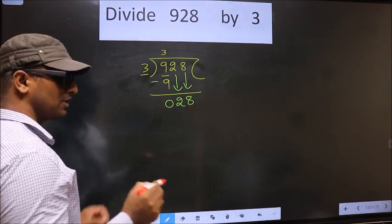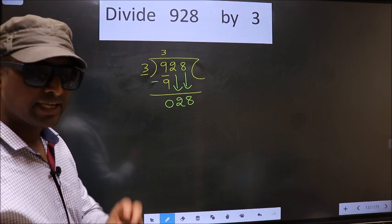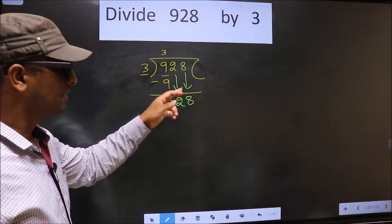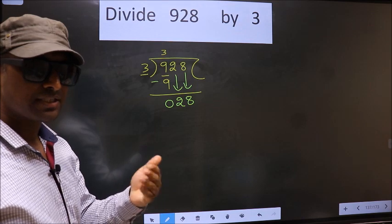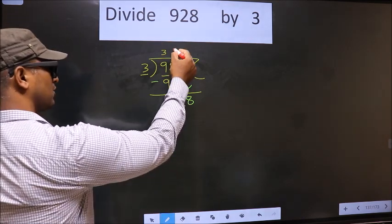I repeat. Over here you should remember this point. Whenever you are bringing down 2 numbers at the same time, compulsory you should put 0 in the quotient.